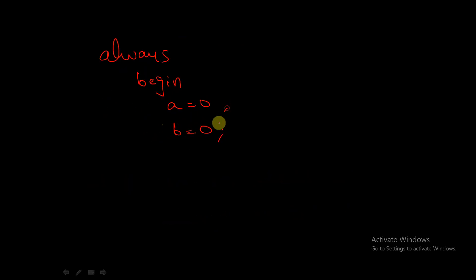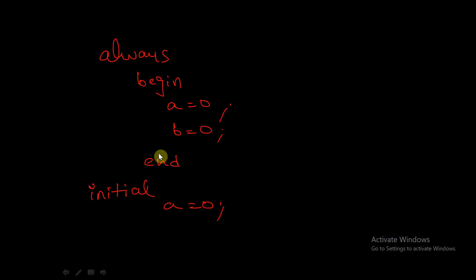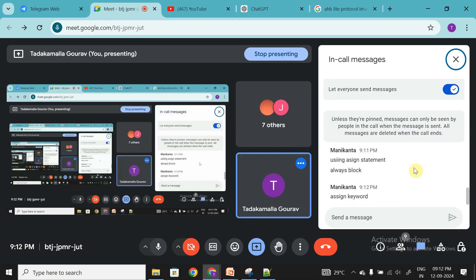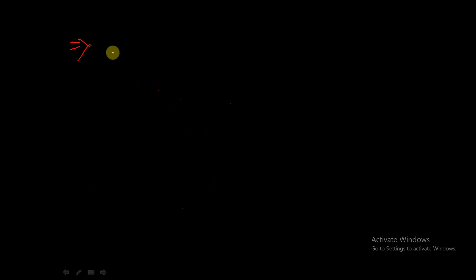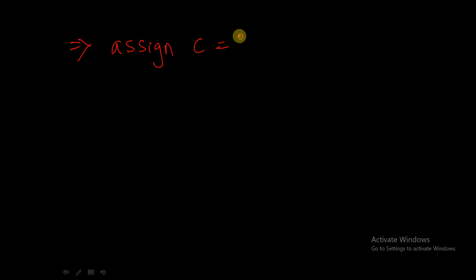For example, you can use an always block or an initial block: always begin A = 0; B = 0; end, or initial A = 0. For a wire, how do you assign a value? We use the assign keyword — assign C = 1 or 0.